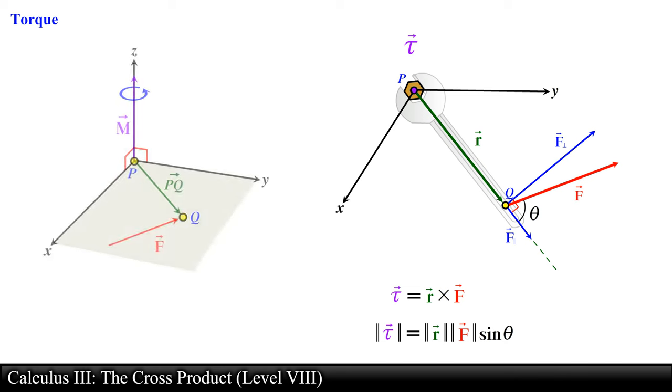By using the right-hand rule, we can determine if the wrench will be rotating clockwise or counterclockwise. If the wrench is rotating counterclockwise, then the torque vector will be pointing up out of the page or plane.